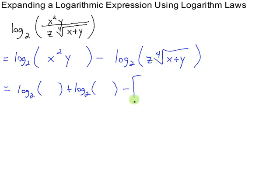But I have to make sure since it's subtraction, I have to subtract the entire addition. So I'm going to have log of one thing plus log of another thing, right? So the x squared is going to go here, and the y is going to go here. So log base 2 of x squared plus log base 2 of y minus log of the z plus log of the fourth root.